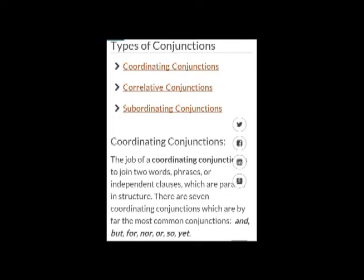Example number 3: I play cricket and Robin plays football. Here, 'and' is the conjunction. Example number 4: When he was sick, I went to see him. Now let's just proceed to the types.